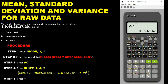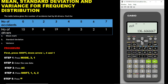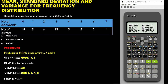That covers raw data. Now let's work with ungrouped data using a frequency table. The next question says: 'The table below gives the number of accidents had by 60 drivers. Find the mean, standard deviation, and variance.' For this type of question we need both x-coordinates and y-coordinates (frequencies) in our calculator setup.